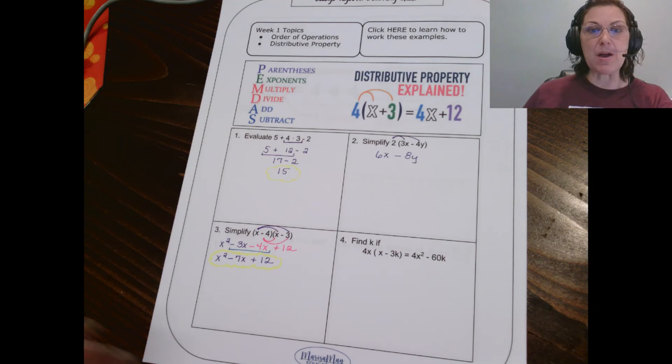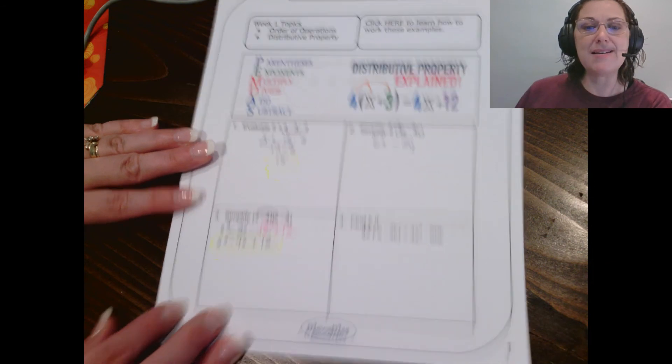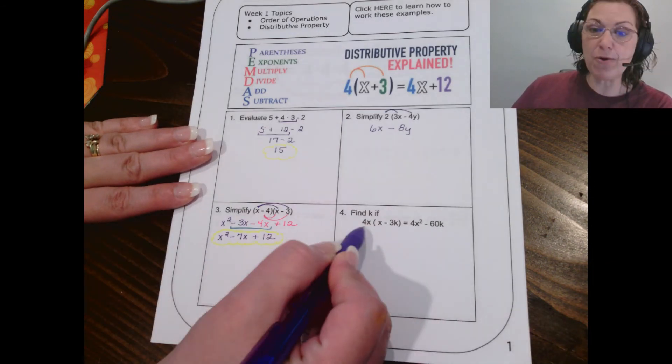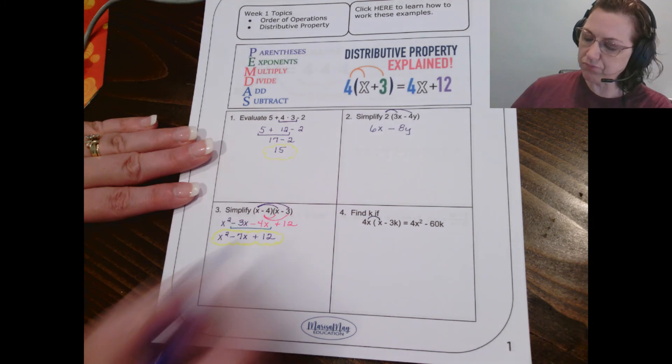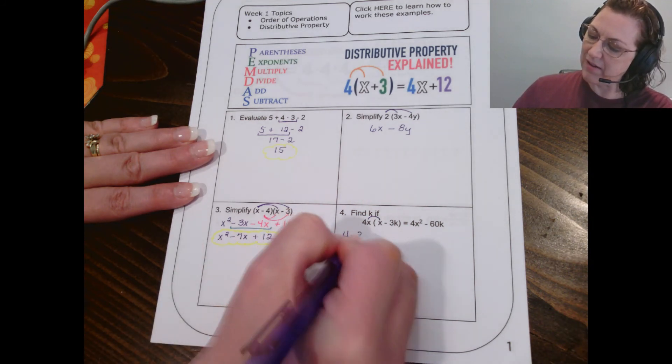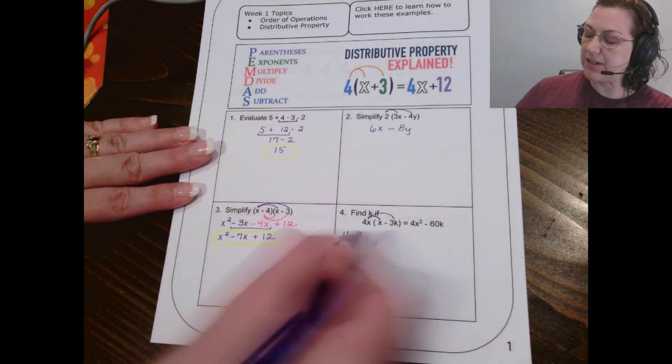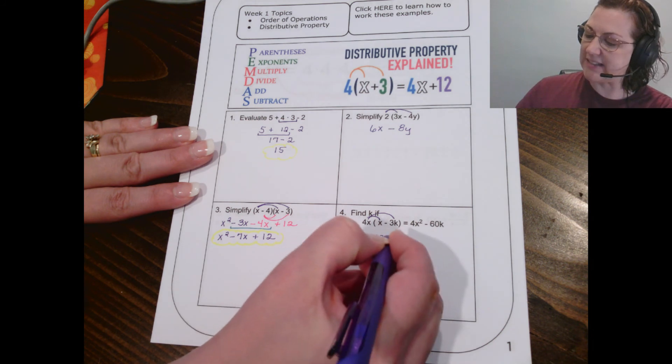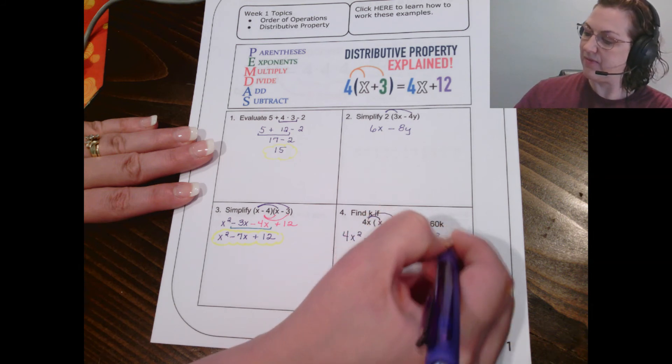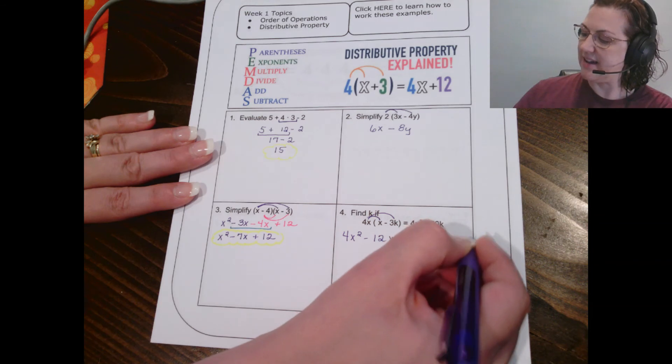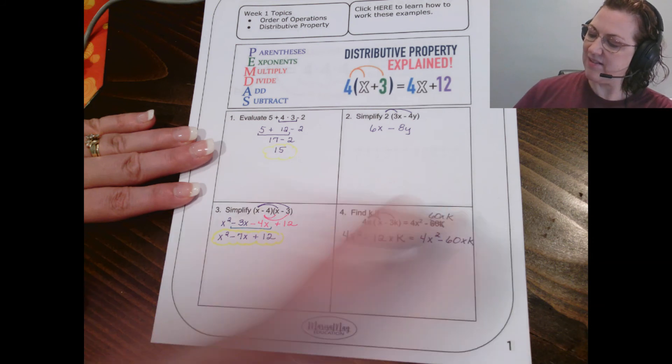Last problem on this page. Problem 4 is very much like that last problem in problem 3, but it asks it in a little bit different way. So, let's take a look. We have 4x in front of a parentheses. So, we're going to distribute it. I've got 4x times x, which is 4x to the second. Then, I've got 4x times negative 3k. So, that's 4 times negative 3 is negative 12. And then, I've got an x and a k on it. And I think that 60 needs to have a kx on it. So, we'll fix that.